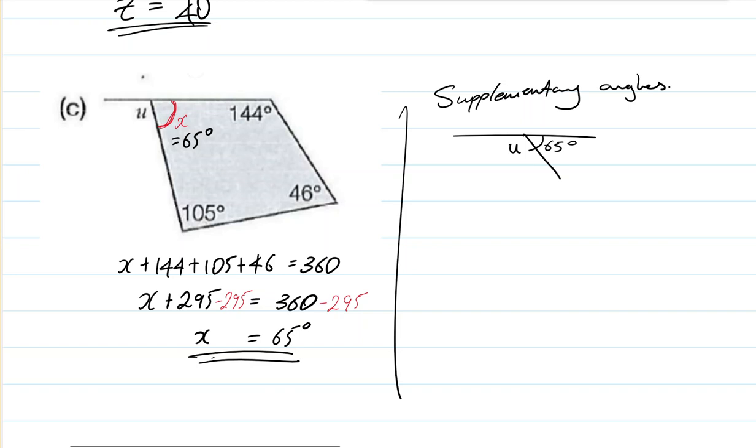To find U for supplementary angles, add up to 180. We know that. In a straight line. So U should be equal to 180 degrees minus 65 degrees. And U equals, what's the answer there?